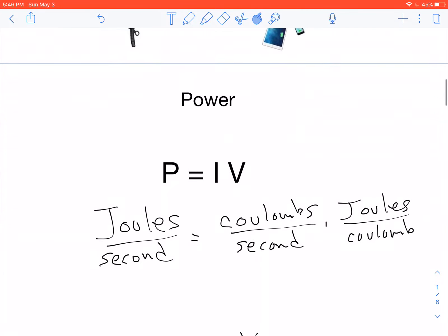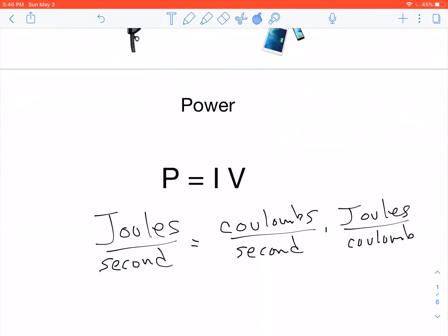Now the formula that determines how much power is used, that's joules per second in an electric circuit, is P equals IV. The power is equal to the current times the potential in the circuit. The units of power, of course, are watts, which are equivalent to joules per second.